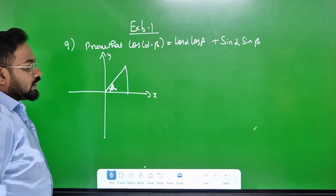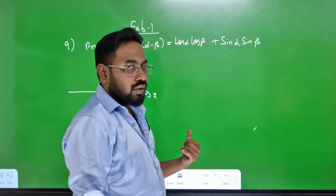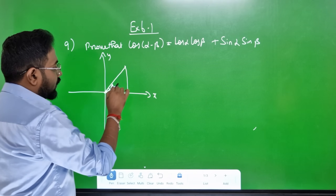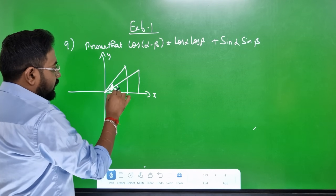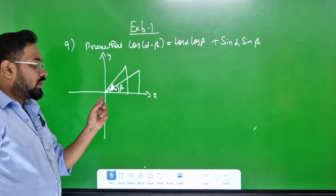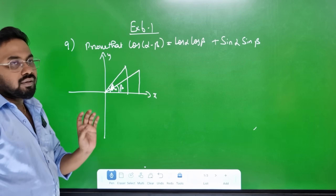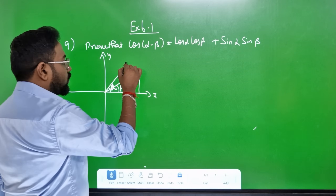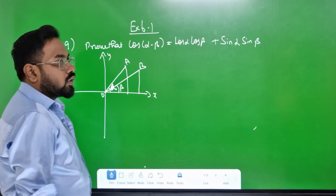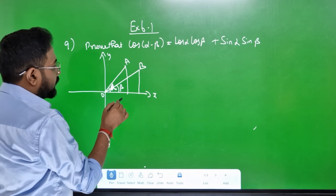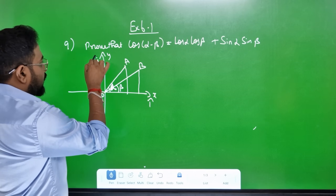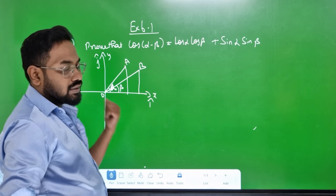Let's take a vertical line — it's a trigonometry function. Let's take this angle: this is beta. Let's take a vertical line. This is the first angle, alpha. This is the second angle, beta. This is B. Y-axis is sin. So if you look at X-axis, cos is i-cap. Y-axis is j-cap.